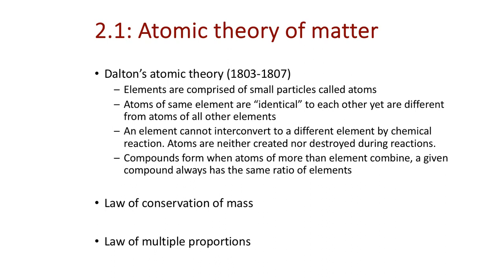Getting started, the first section of Chapter 2 considers matter as being comprised of atoms. This theory began as early as the early 1800s — John Dalton proposed atomic theory postulates without any knowledge of the actual composition of matter. At that time we didn't know about electrons, protons, or neutrons; those discoveries came about 100 years later.